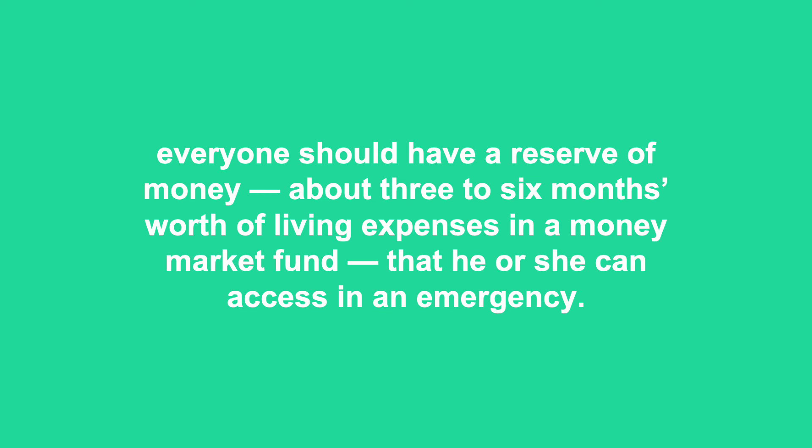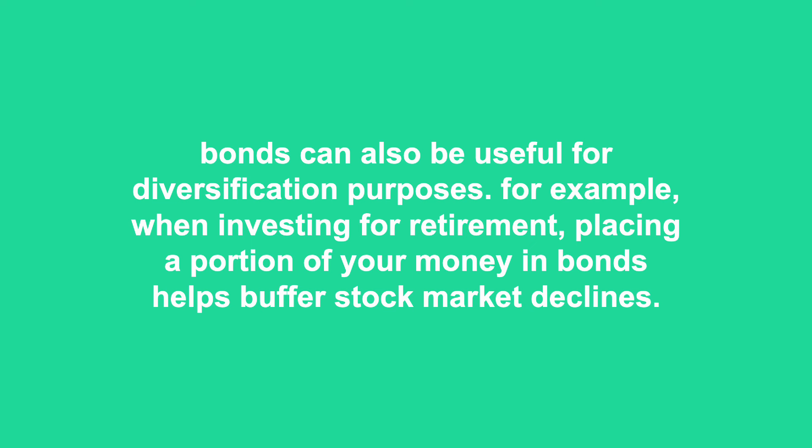Investing money for retirement is a classic long-term goal. Your current age and the number of years until you retire are the biggest factors to consider when allocating money for long-term purposes. The younger you are and the more years you have before retirement, the more comfortable you should be with growth-oriented and more volatile investments, such as stocks and investment real estate. Bonds can also be useful for diversification purposes — placing a portion of your money in bonds helps buffer stock market declines. A useful guideline is to subtract your age from 110 or 120 if you want to be aggressive, or 100 to be more conservative, and invest the resulting percentage in stocks.